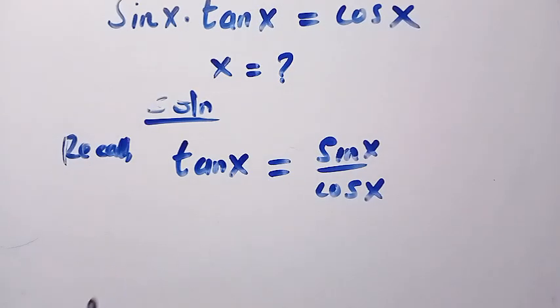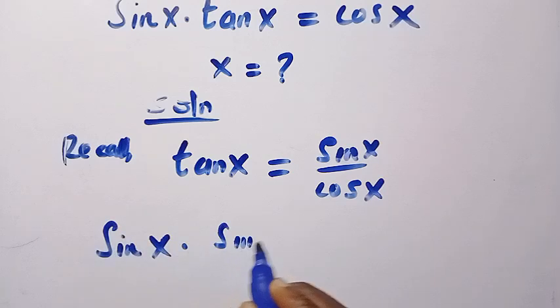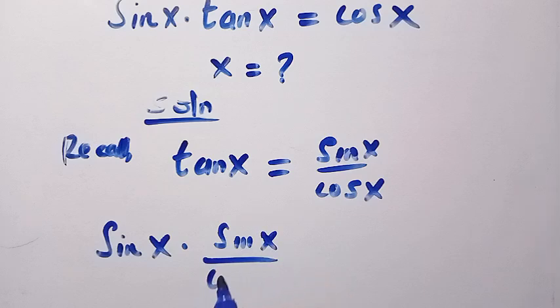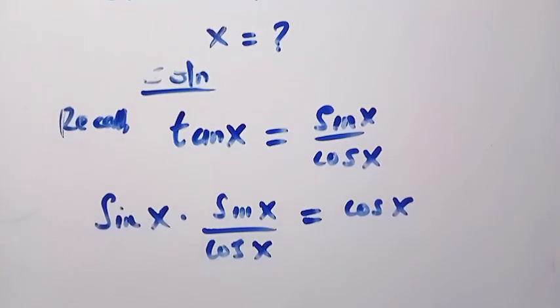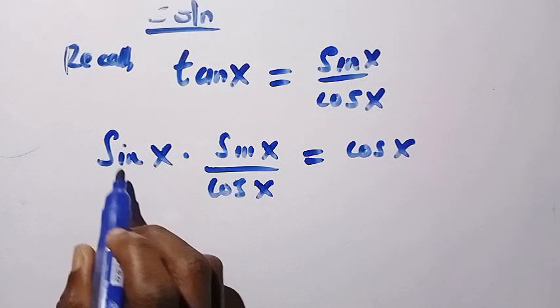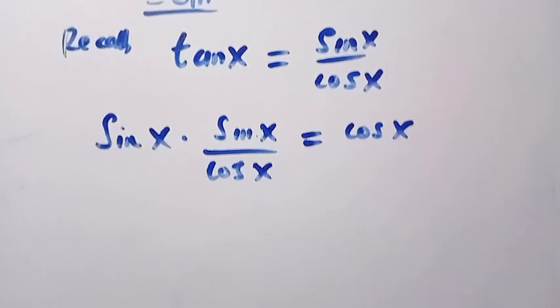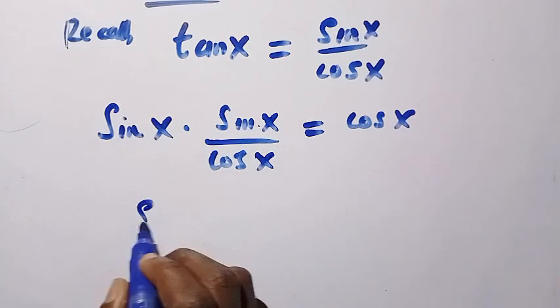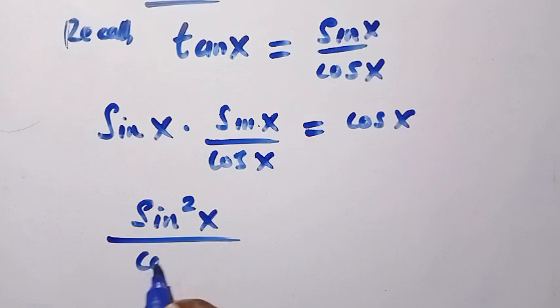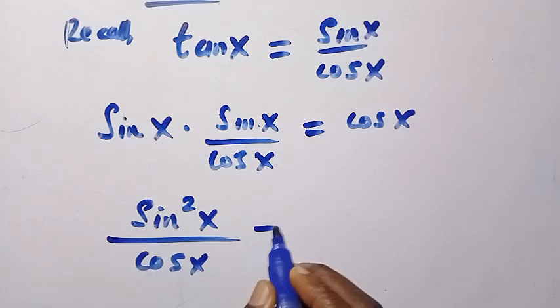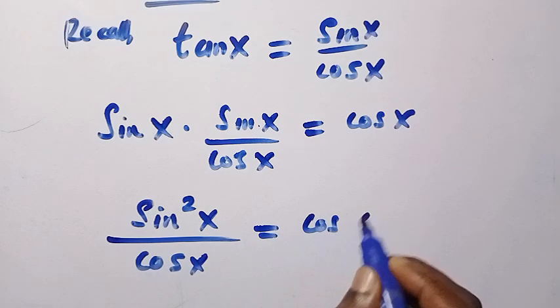And by replacing it, we are going to have sin x multiplied by sin x divided by cos x equals cos x. Then, sin x multiplied by sin x gives us sin squared x divided by cos x equals cos x.